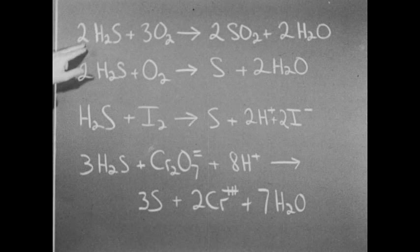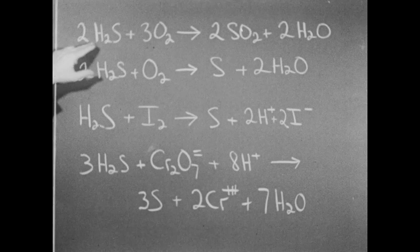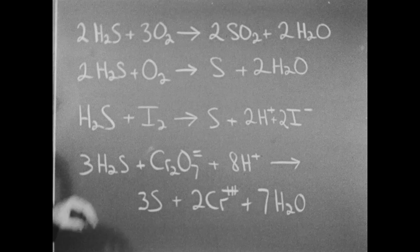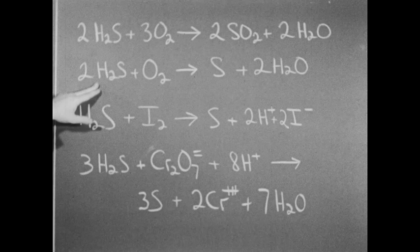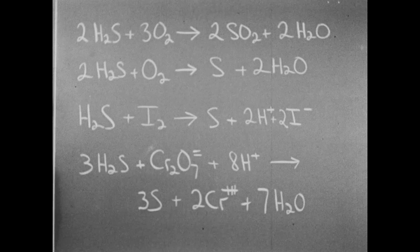When we ignited the mixture of hydrogen sulfide and oxygen, some of the hydrogen sulfide burned yielding sulfur dioxide and water. This equation requires two volumes of hydrogen sulfide and three volumes of oxygen — one and a half times as much oxygen as hydrogen sulfide. In our reaction, we used equal volumes, so not quite enough oxygen was present. Therefore, some of the hydrogen sulfide burned in a deficiency of oxygen, yielding sulfur and water instead — which accounts for the sulfur deposited on the sides of the bottle.